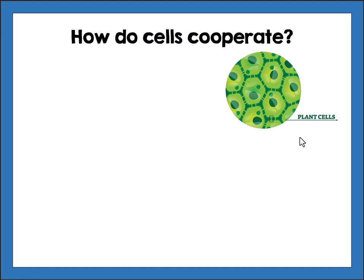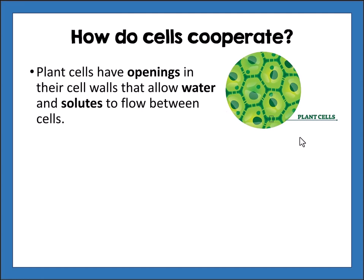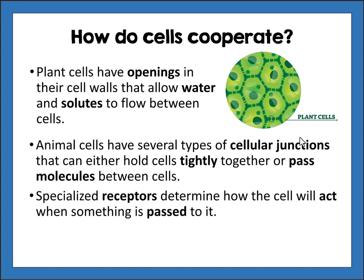How do cells cooperate in a multicellular organism? Plant cells have openings in their cell walls that allow water and solutes to flow between them, helping to keep the balance of water and solutes across the whole system. Similarly, animal cells have several types of cellular junctions that can either hold cells tightly together or pass molecules between them. Specialized receptors help determine how each cell will act when something is passed to it.